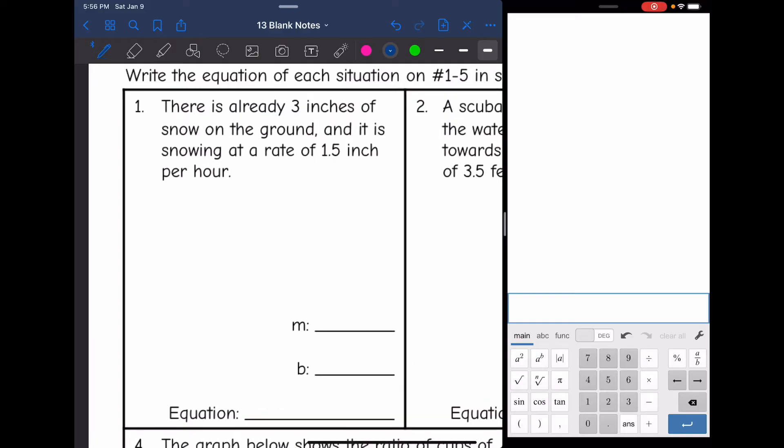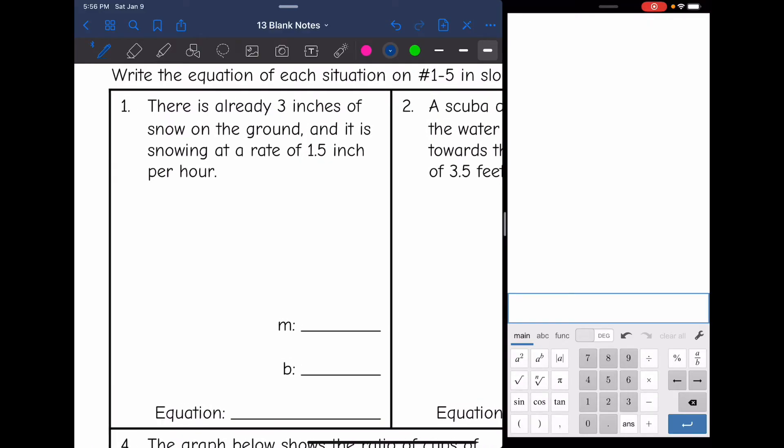This first one says there is already three inches of snow on the ground and it is snowing at a rate of 1.5 inch per hour. There's two words right there that tell us that 1.5 inch is the slope. Rate is another word for slope and there's that keyword per. So 1.5 is definitely going to be the slope. And then it says there is already three inches of snow on the ground. That means we are starting at a positive three. So our equation in slope-intercept form is y equals 1.5x plus three, and that shows that we started with three inches of snow and we are adding an additional 1.5 inch of snow per hour.